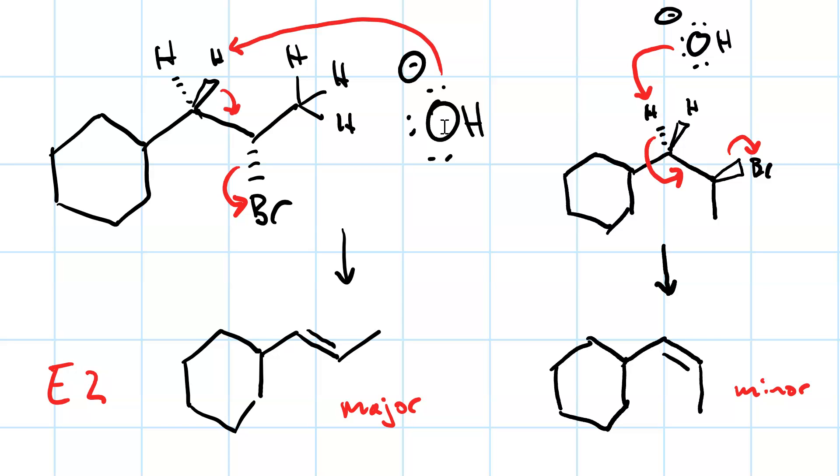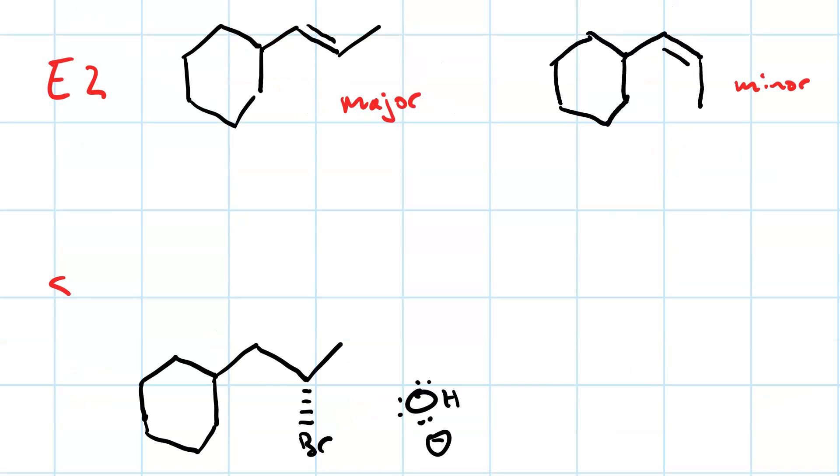But we'll also get 30% or so of an SN2 product. In SN2, the hydroxide acts as a nucleophile, does backside attack on the alpha carbon, and the leaving group leaves. So the SN2 product is an alcohol with inversion of configuration, also a minor product.